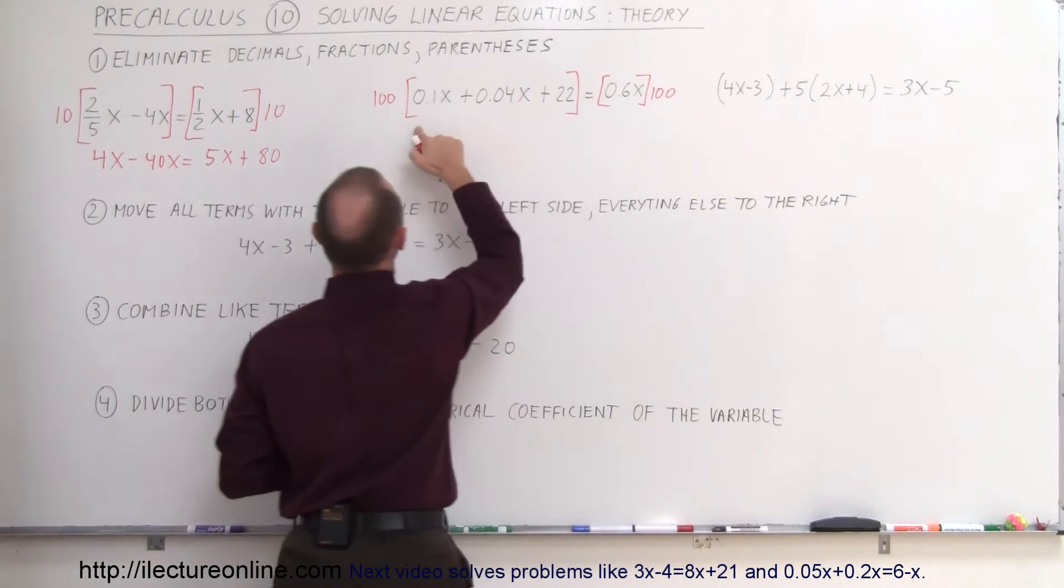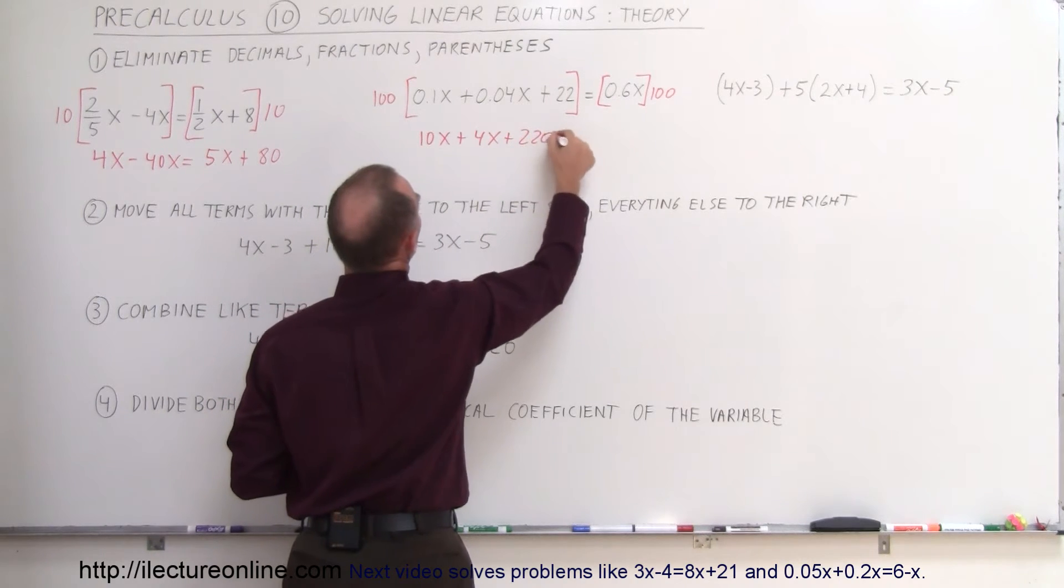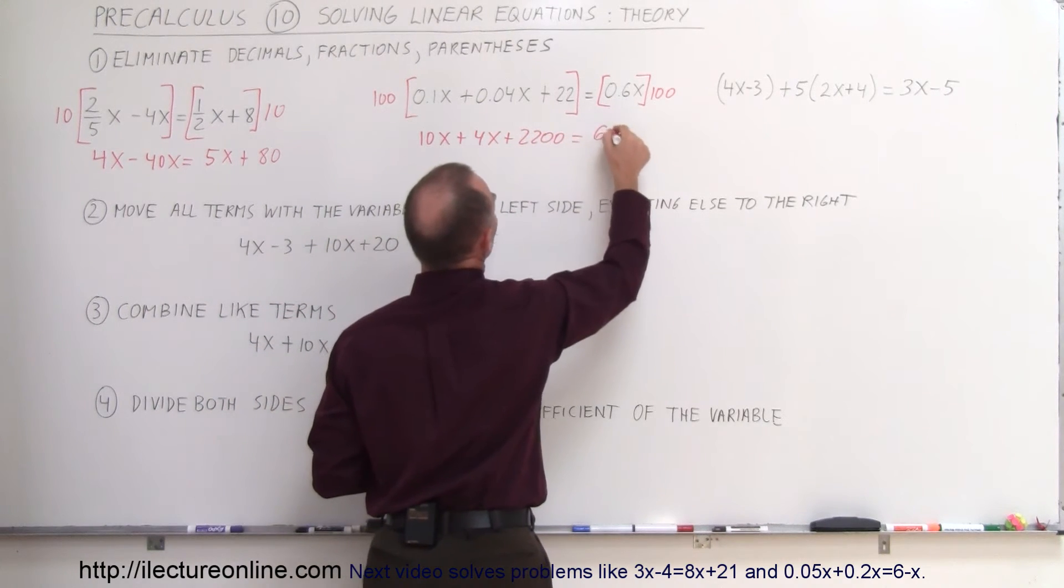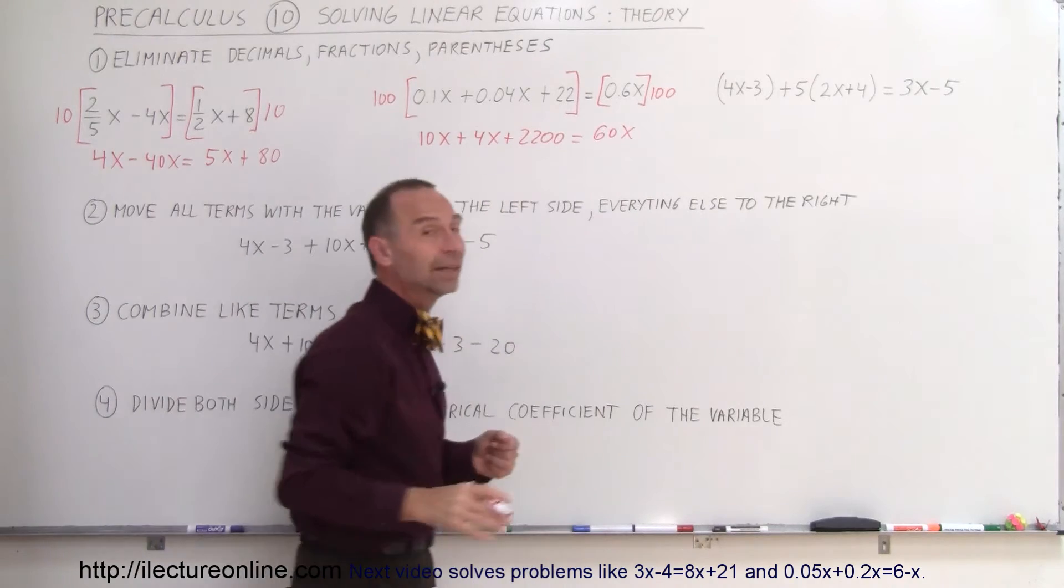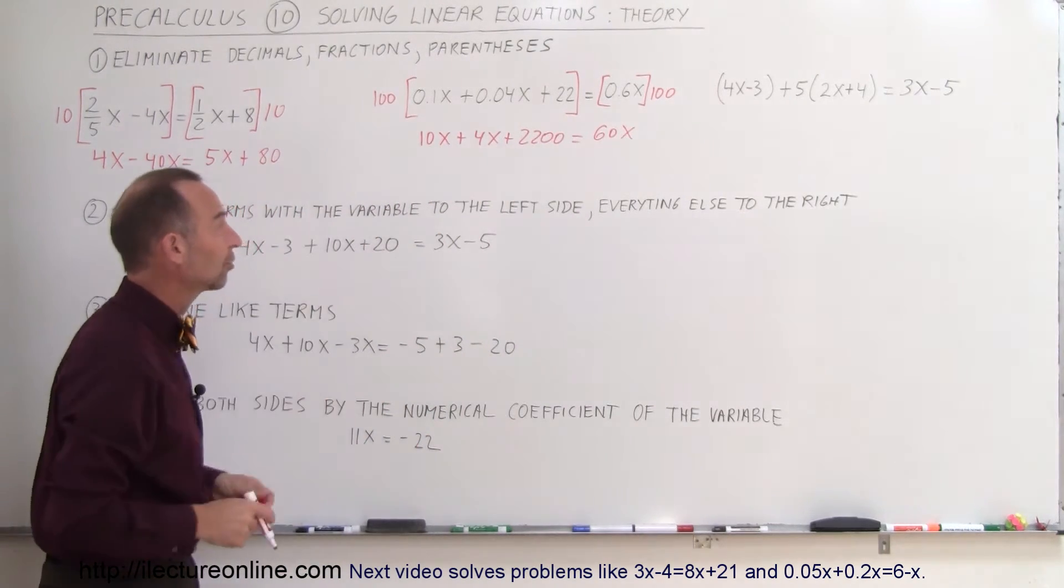And if you do that, the left side becomes 10x plus 4x plus 2200 equals, the right side becomes 60x. And that's how we get rid of the decimal. So now we simply have a linear equation. You can then follow the next three steps to solve that.